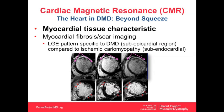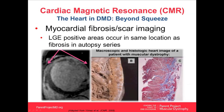In Duchenne muscular dystrophy, scar formation is actually on the outside surface of the heart — the epicardial surface — whereas in a patient who has a heart attack (ischemic cardiomyopathy), the scar is on the inside. This is one unique finding in boys with DMD. The cardiac MRI image shows the white area as scarred tissue, darker area as normal tissue, and this correlates with the pathologic slide where the blue staining indicates scar tissue or fibrosis.